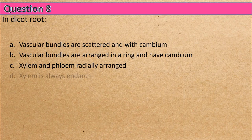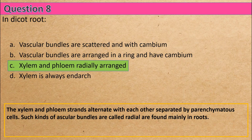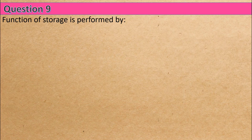Question 8: In dicot root — Option A: vascular bundles are scattered and with cambium, Option B: vascular bundles are arranged in a ring and have cambium, Option C: xylem and phloem are radially arranged, Option D: xylem is always endarch. The correct answer is Option C: xylem and phloem radially arranged.